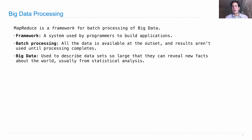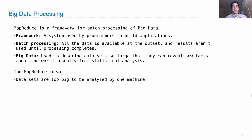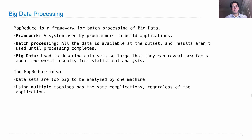Now, there are obviously privacy concerns about this sort of thing, and that's important to worry about, but this can also be used for good. So the idea behind MapReduce is that datasets might be too big to be analyzed on one machine. They might not even fit on that machine, and even if they do, it might take too long to just use one machine to process them.